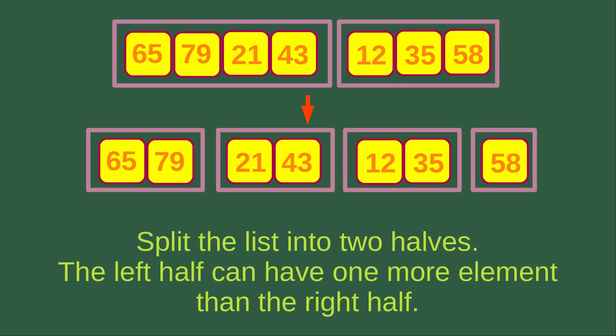So we can continue the splitting. The box with four elements is split into two boxes, each with two elements. And the box with three elements is split into two smaller boxes. The first box created has two elements, and the second box created has only one element.